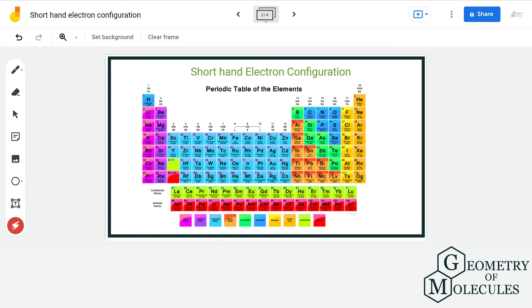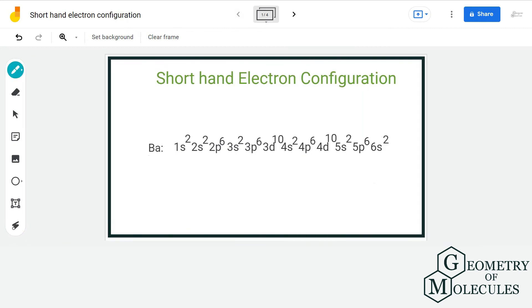Then we will look at the noble gas before barium. Here, the noble gas is xenon. We can see that xenon has 54 electrons and the inner electronic configuration of barium is same as that of xenon. This is the shorthand electronic configuration of barium.